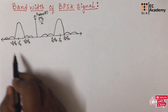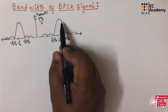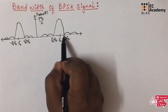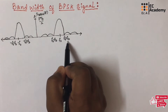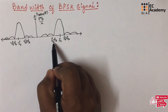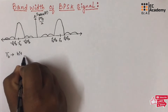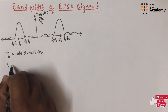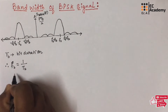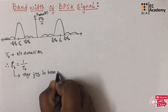In this spectrum of BPSK signal, let us consider the frequencies that are centered across F0. This is the main lobe which is centered across the frequency F0, and if you take this main lobe, the maximum frequency is F0 plus FB and the minimum frequency is F0 minus FB. Let us consider TB which is bit duration. Therefore, we can find FB which will be equal to 1 by TB. Here FB is the maximum frequency in the baseband signal.